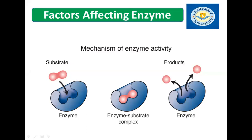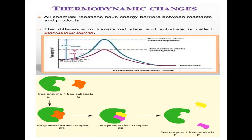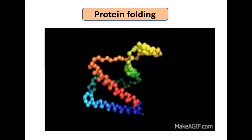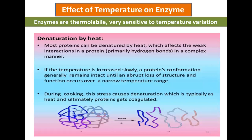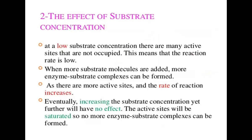Today I will discuss the factors affecting enzymes, which is a continuation from yesterday. So far, we have studied various enzyme-substrate reaction schemes, the thermodynamic changes of various enzymes when reacting with the substrate, the protein folding nature, the effect of temperature on the enzyme including denaturation by heating, and the optimum temperature for enzymatic reactions. Today I will start with the effect of substrate concentration.